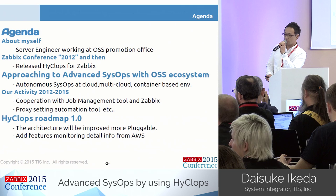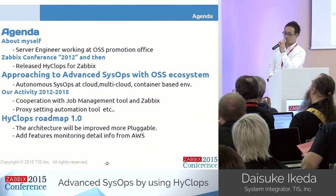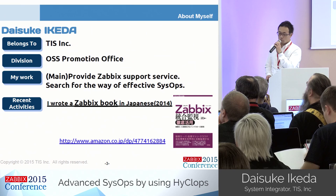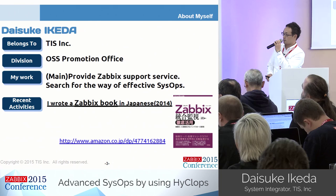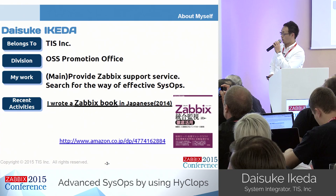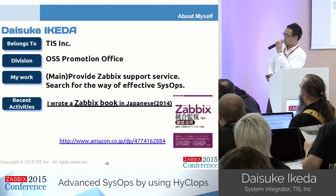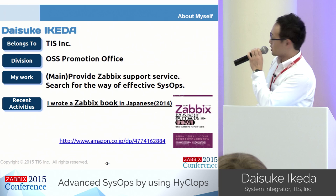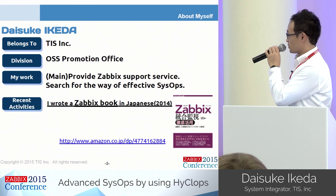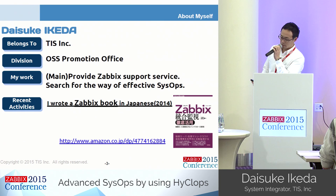Hycrops is a hybrid cloud management plugin for Zabbix. This is an OSS tool. Let me give you a brief introduction about myself. I belong to the OSS Promotion Office in TIS. TIS is one of the largest system integrators in Japan. Our division provides OSS support service and development of OSS tools. My main mission is to provide Zabbix support service to Zabbix users in Japan, and another mission is to achieve effective SysOps. Today's talk is based on the latter mission.